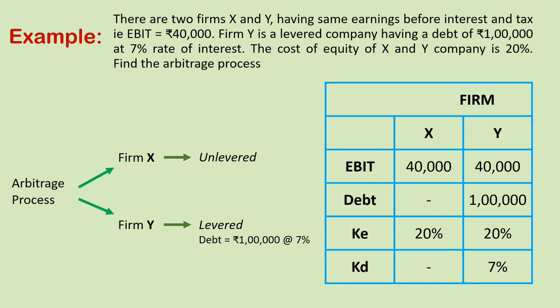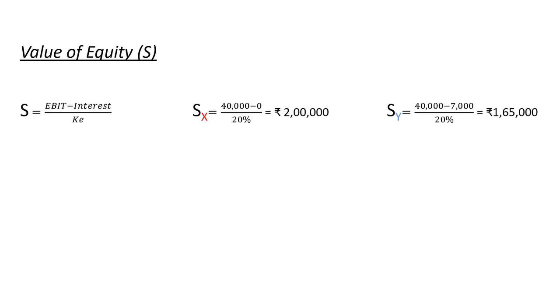The debt component is present only in firm Y at rupees 1 lakh. Both firms have the same cost of equity at 20%, and the cost of debt applicable to only firm Y is 7%. The value of equity, denoted by S, is calculated by subtracting interest from EBIT and dividing by the cost of equity. Firm X, having no debt, has no interest payable, so its value of equity amounts to rupees 2 lakhs. Firm Y's value of equity amounts to rupees 1 lakh 65,000.